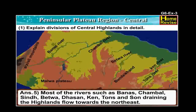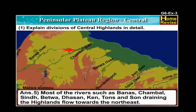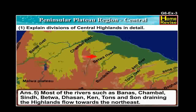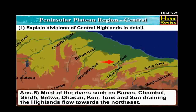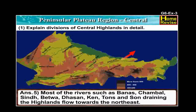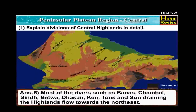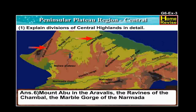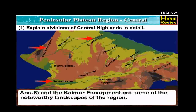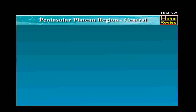Most of the rivers such as Banas, Chambal, Sindh, Betwa, Dhasan, Cane, Tons and Son draining the highlands flow towards the north-east. Mount Abu in the Aravallis and the ravines of Chambal, the Marble Gorge of Narmada and the Kaimur Escarpment are some of the noteworthy landscapes of the region.